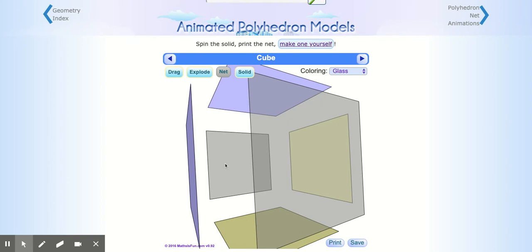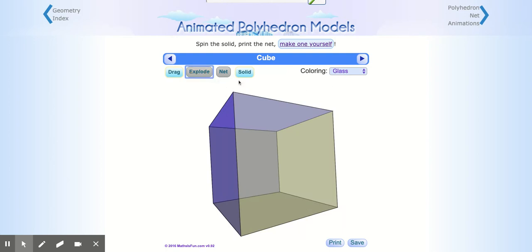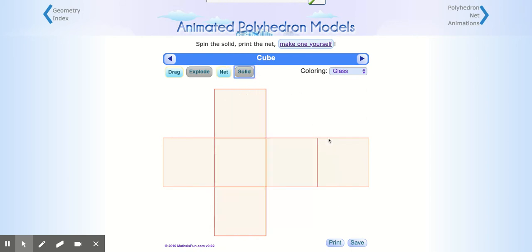Now I'm going to click on explode and I'm actually going to click net right here. You can now see the net. I can get rid of that solid in the background also.